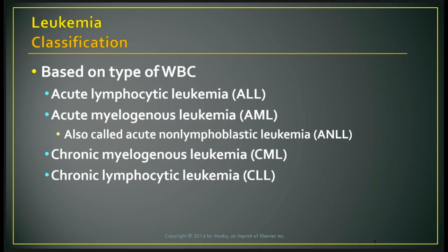You can review table 31-24 for more details about the different subtypes of leukemias. They all basically present the same for a patient. The way they differentiate is by looking at a slide or blood smear — the pathologist, oncologist, or hematologist looks at the peripheral smear to diagnose which type of leukemia it is.